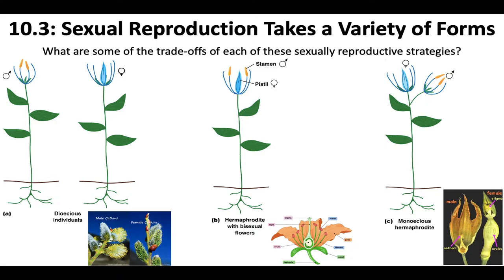Plants have some really interesting methods of sexual reproduction, which I showed you in my garden at the beginning of this video. You can have dioecious individuals — willows are one example — they can have a male plant and a female plant. Here's what a male flower looks like that produces pollen, which is sperm, and then here's what a female flower looks like that receives that pollen so that it can form seeds for reproduction.